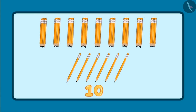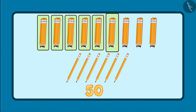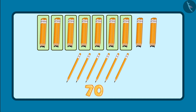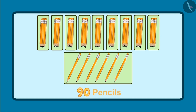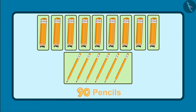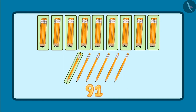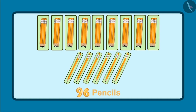So these are 10, 20, 30, 40, 50, 60, 70, 80, and 90. This means there are 90 pencils and plus 6 pencils more. So, first of all, there are 90 pencils and 6 more pencils with me. So 91, 92, 93, 94, 95, and 96. There are 96 pencils.